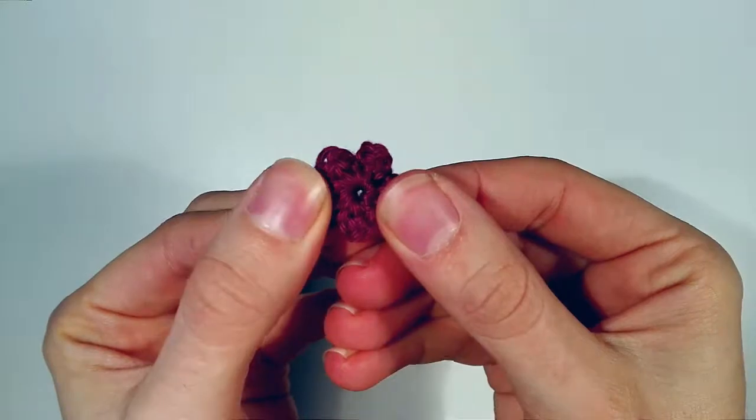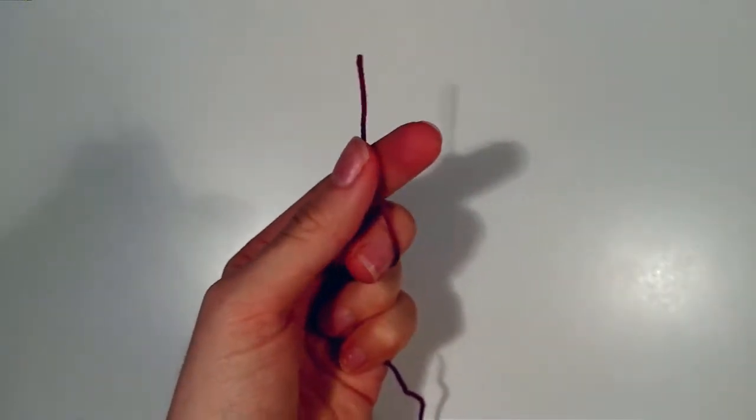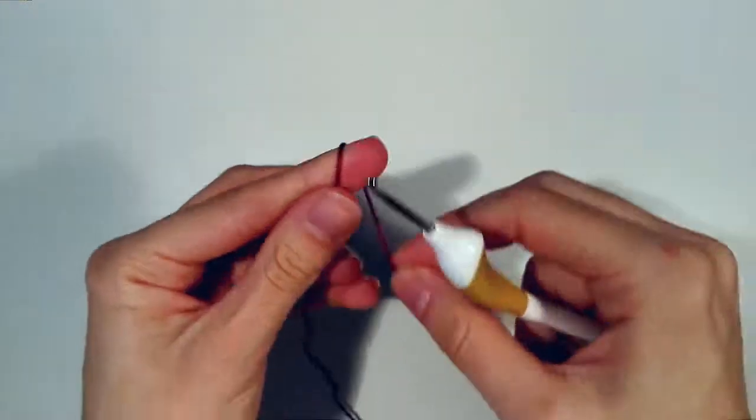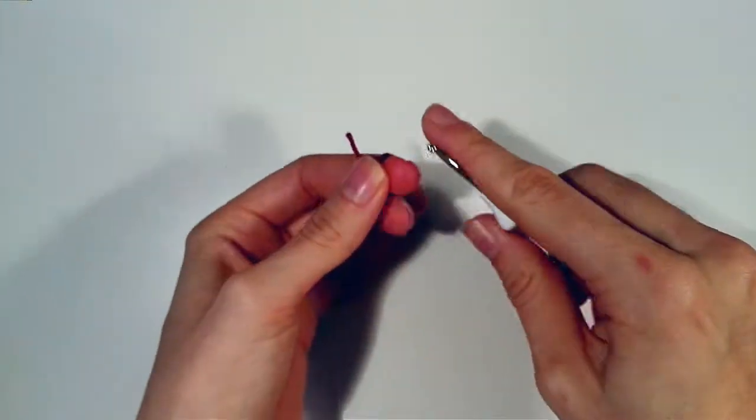So for this little flower, I'm getting my yarn and my hook and I'm starting with a magic ring.